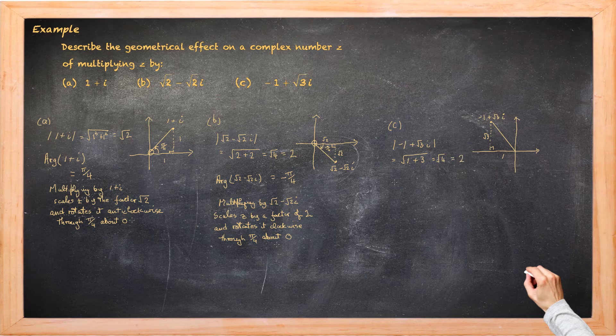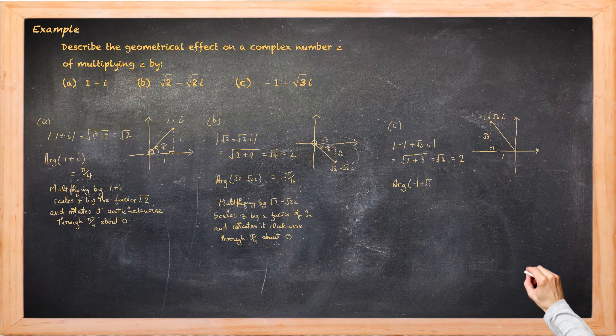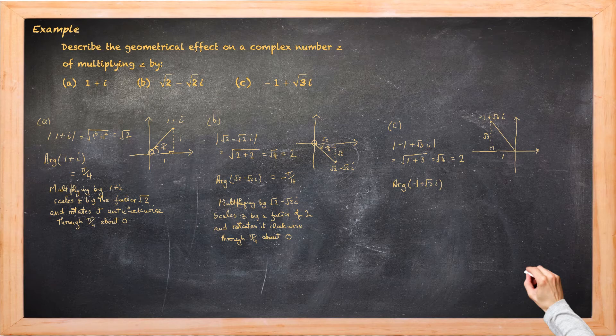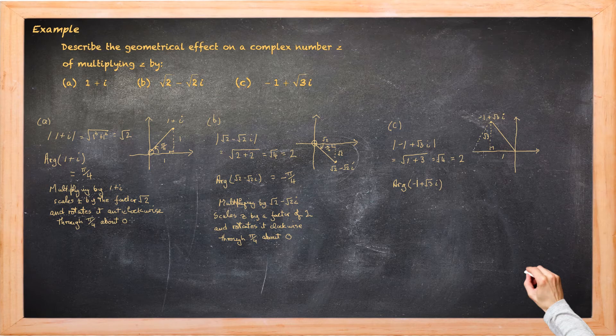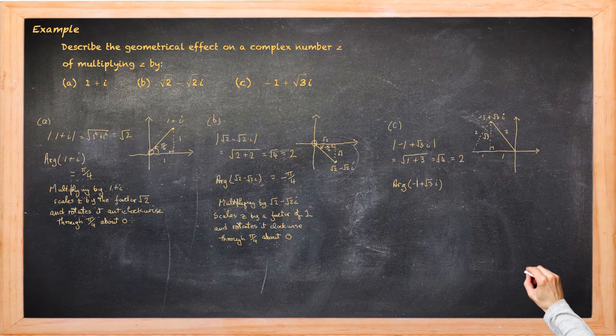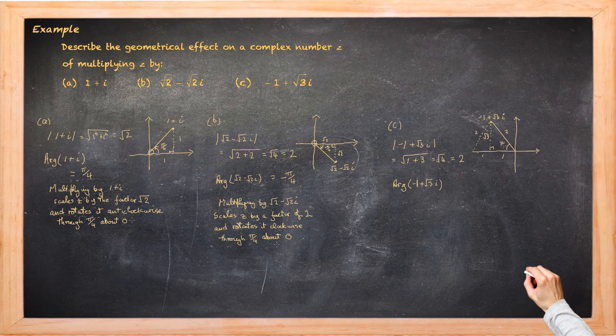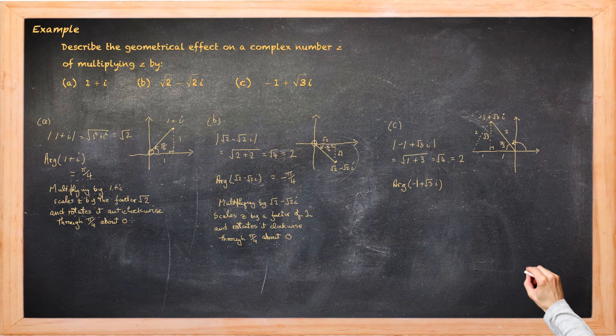And the principal value of the argument of negative 1 plus root 3i. Well that's a bit more interesting. If you look at the diagram and imagine this is half of an equilateral triangle where each side is 2 and immediately you can see that must be a pi upon 3 angle sitting there. And the argument, the principal argument will be from the x-axis all the way around there which is pi minus pi upon 3 which is 2 pi upon 3.